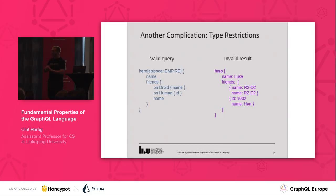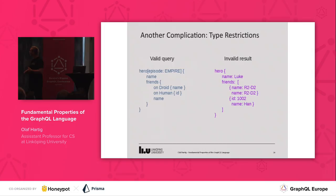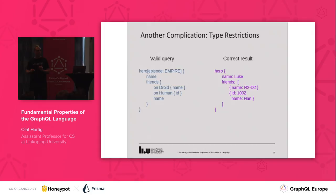There's another complication: type restrictions, which arise whenever you have inline fragments. In this query on the left-hand side, there's a bit of repetition because for droids we want to see the name, but also for everybody we want to see the name. If you naively produce a result, then for R2D2 we would have the name twice, which is not a correct result. The correct result is to get rid of this duplication. So for those of you implementing GraphQL servers, make sure that your implementation works correctly according to all of this.